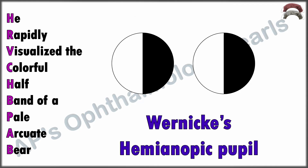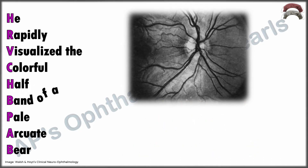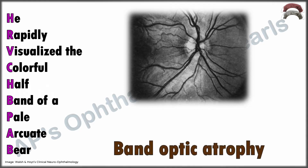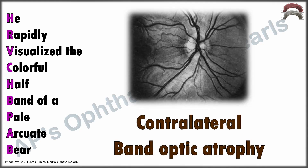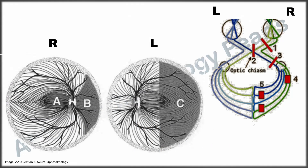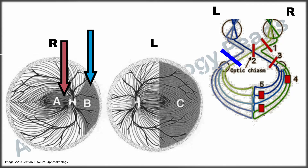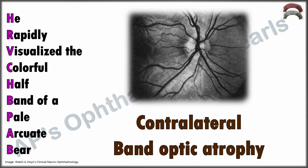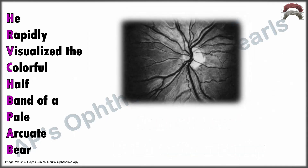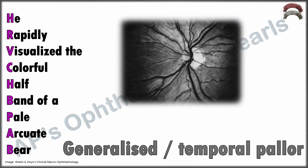'Band' represents band or bow-tie atrophy of the contralateral optic disc that occurs in chronic tract lesions. This is explained by the pattern of nerve fiber arrangement in the retina. The crossing nasal fibers in the left optic tract come from the nasal retina and from the nasal aspect of the macula in the right eye. This results in the horizontal band-shaped pallor of the contralateral eye.